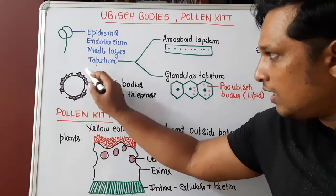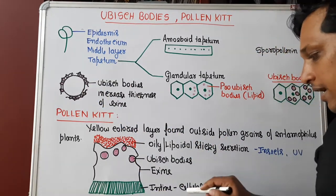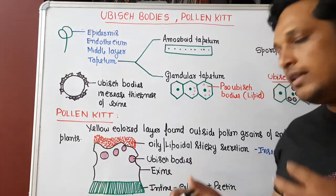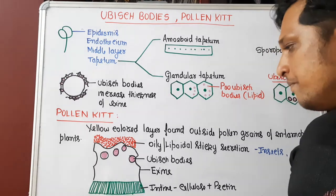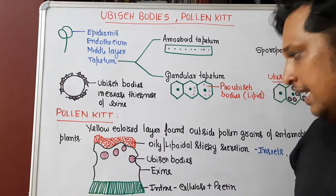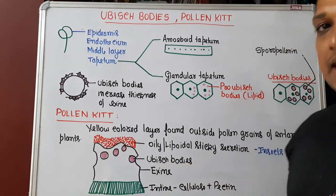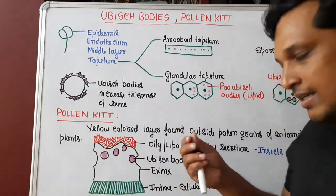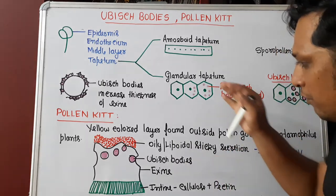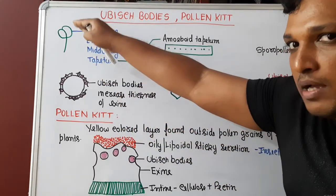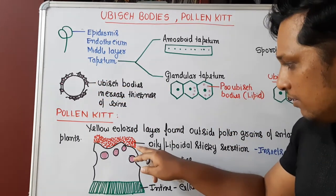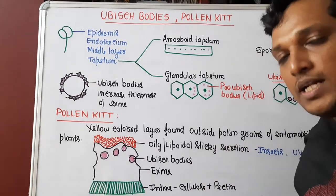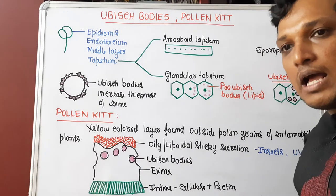If you consider the wall layers of the pollen grain: the innermost is intine, made up of cellulose and pectin, then comes exine. Ubisch bodies are involved in the formation of exine, and it is made up of sporopollenin. Outside the exine layer there will be an oily, lipoidal, sticky secretion. This oily secretion also comes from tapetum, and whenever an insect visits such an anther or flower, this oily lipoidal layer, being sticky, helps in the attachment of the pollen grain to the insect so that pollination happens efficiently.